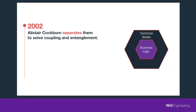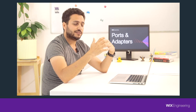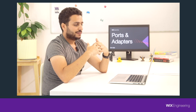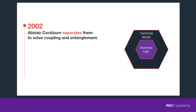Ports and adapters evolved from hexagonal architecture that Alistair Cockburn wrote in the mid-nineties. His motivation was driven from the same scaling issues we talked about, and he understood that the code of the technical details should not be inside the code of the business logic. So he decoupled them. He realized that every application, small or big, has its business logic on the inside and the technical details on the outside.